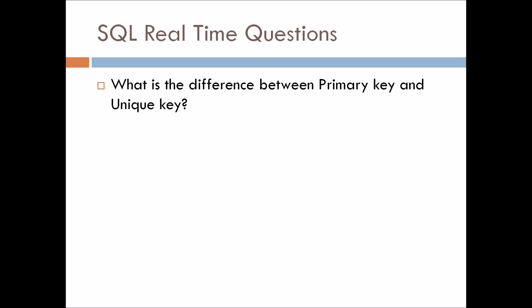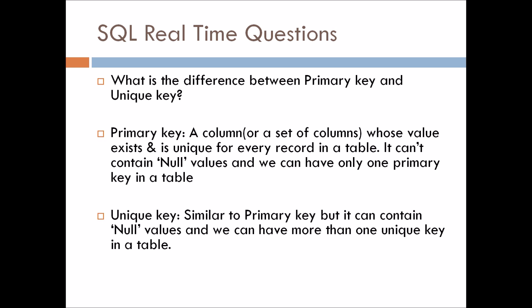What is the difference between a primary key and a unique key? This is a very common question asked in most interviews for the Power BI developer position. So, a primary key is a column or a set of columns whose value exists and is unique for every record in the table, and it cannot contain null values. We can have only one primary key in a table.